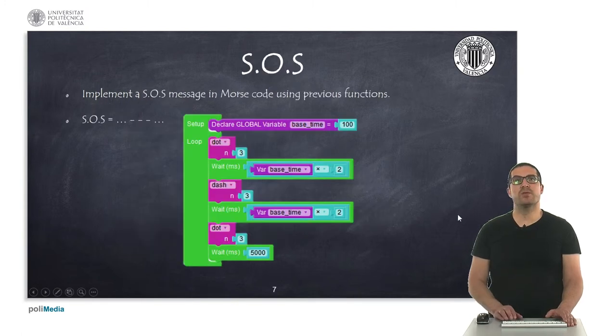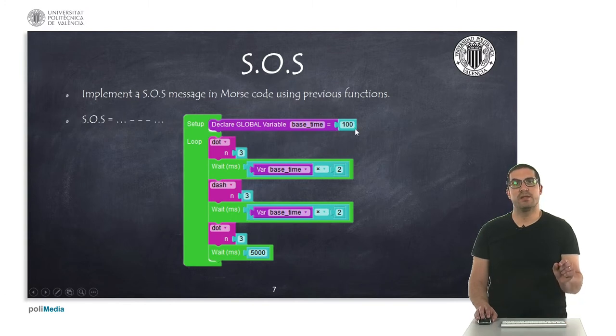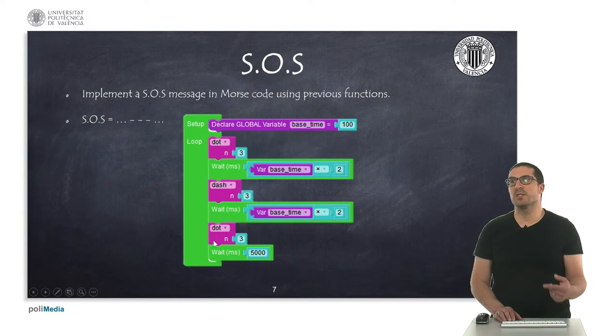Then this is the actual SOS message. In Morse code, the SOS message corresponds to three dots, three dashes, and three dots. And this is what I'm doing here. I'm declaring the base time. This will define the base duration for each dot. I'm just generating three dots here, then wait for some time, three dashes, wait for another time, and then three dots again. And I'm repeating this procedure every five seconds.